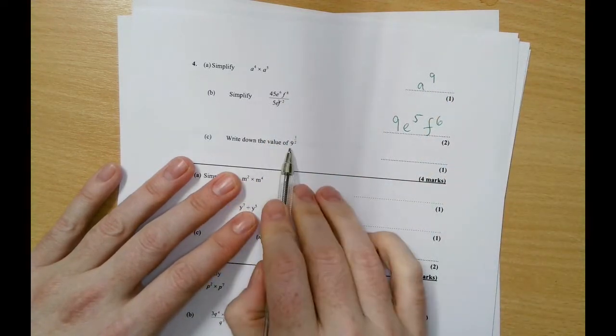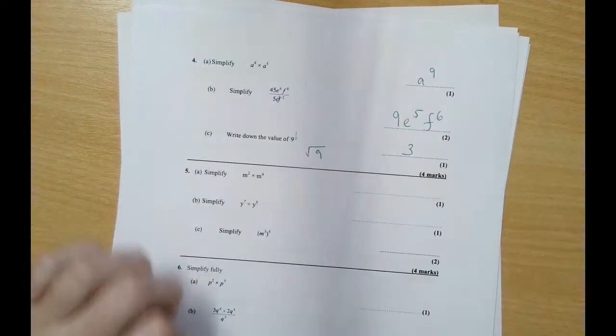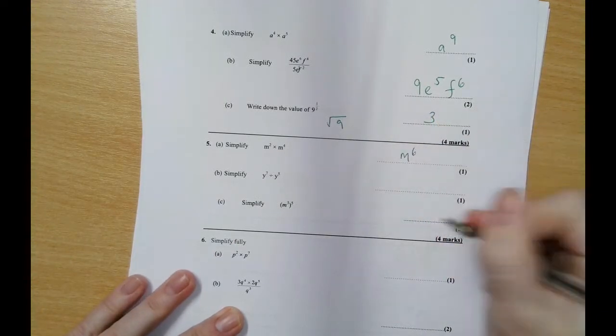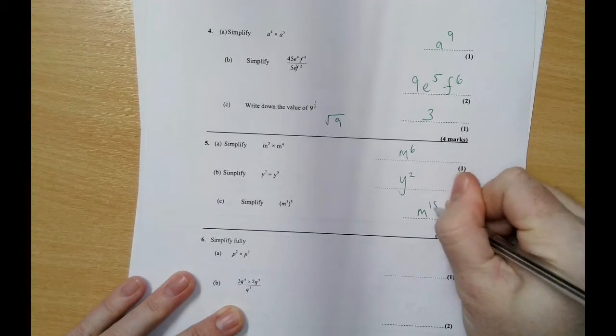Write down the value of 9 to the power of a half, that means the square root of 9 which would be 3. m squared times n to the power of 4 would be m to the power of 6. This would be y squared and this would be m to the power of 15.